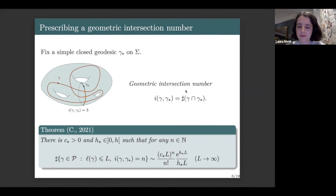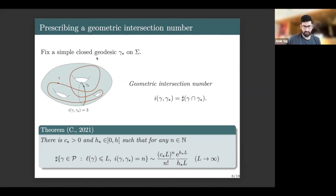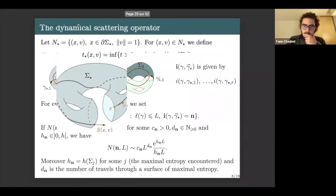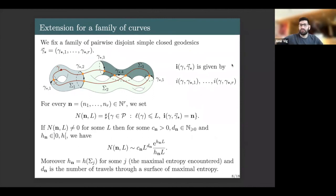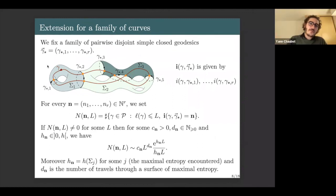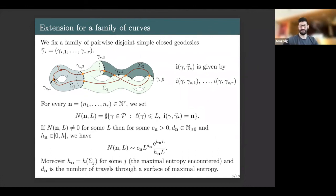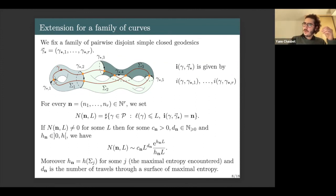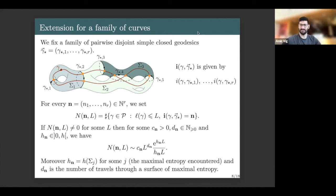There is a question about the family result: is there a limit on the number of geodesics you can put in? You can take an arbitrarily large number, but they must be pairwise disjoint. Someone in the chat says 3g - 3, which is the maximum number of pairwise disjoint simple closed geodesics needed to decompose a surface (a pants decomposition). So the limit depends on the topology of the surface.